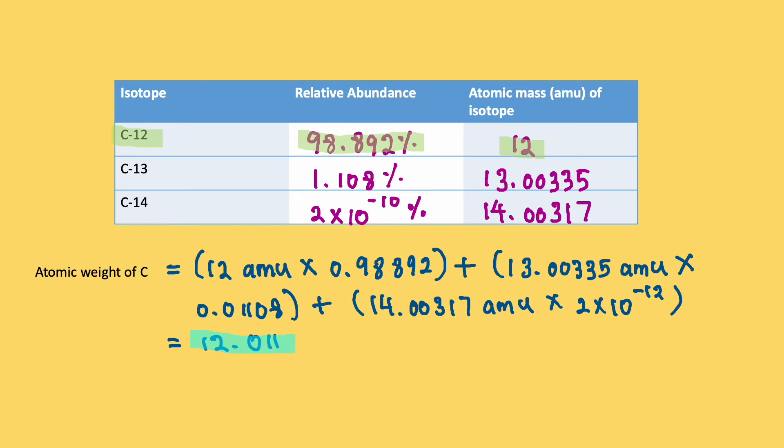For carbon, the relative abundance and atomic masses of each isotope is provided below in the table. Here, carbon-12's relative abundance or isotopic abundance is 98.892 percent and its atomic mass is 12 AMU.